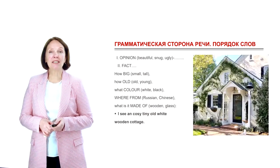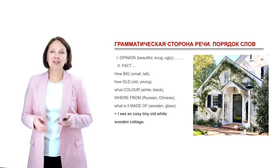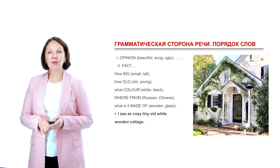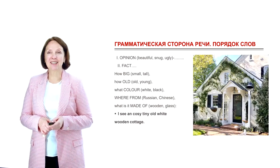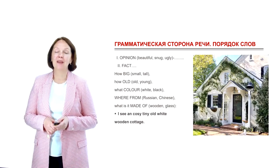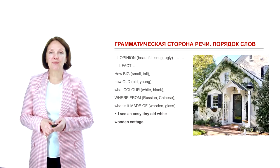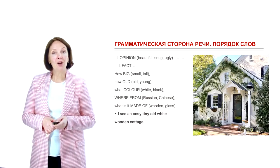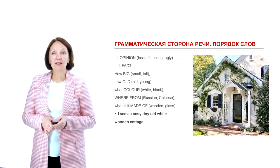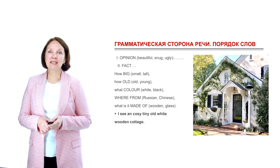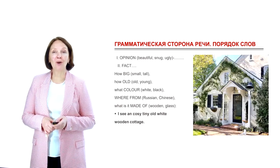Что касается порядка употребления нескольких прилагательных в одном предложении, рекомендуется запомнить следующую последовательность. Сначала всегда используются opinion adjectives — оценочные прилагательные мнения, такие как fantastic, excellent, good, nice, ugly, disgusting. А затем — fact adjectives: huge, middle-aged, blue, and so on. Очередность прилагательных такая: How big? How old? What color? Where from? What is it made of? Например: I see a cozy, tiny, old, white, wooden cottage.